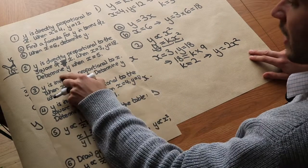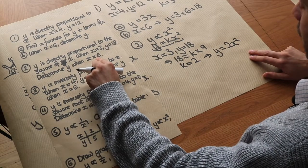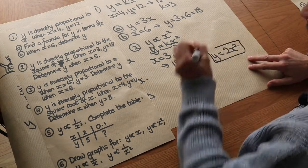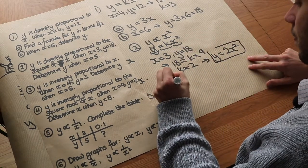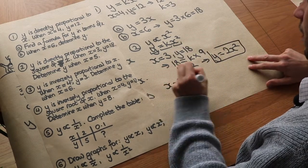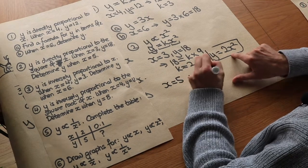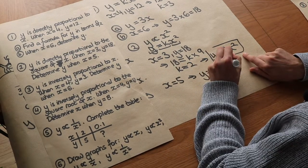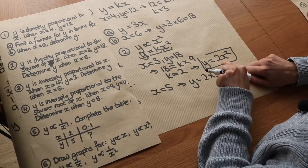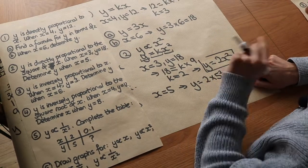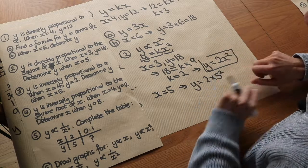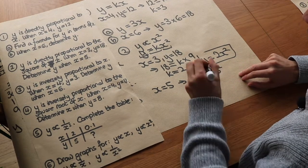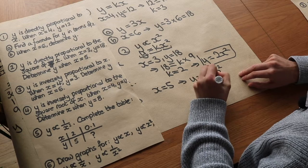We want to find y when x is 5. Using our complete formula: y equals 2 times 5 squared. Remember that 2x squared means 2 times x squared — not (2x) squared. So we get 2 times 25, which equals 50.